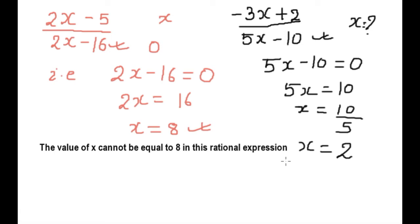The value of x cannot be equal to 2 because this will make the rational expression undefined. P by Q should have Q as an integer, and Q cannot be equal to zero.